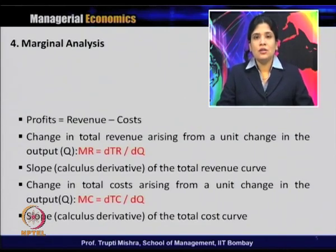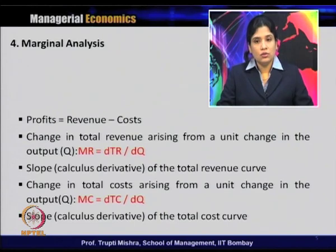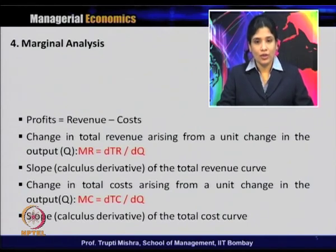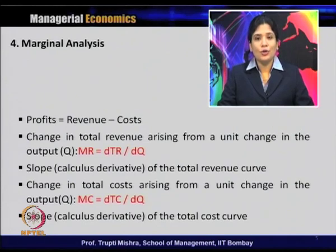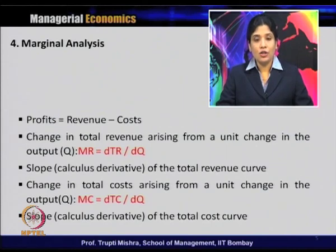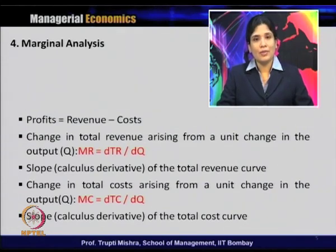Profit is the difference between revenue and cost. Whenever there is a change in total revenue due to a unit change in output, that gives us marginal revenue. Mathematically, we find this by taking the first-order derivative of the total revenue function with respect to Q (output), and geometrically it is the slope of the total revenue curve. Similarly, the change in total cost from a unit change in output gives marginal cost, and geometrically the slope of the total cost curve gives the marginal cost curve.